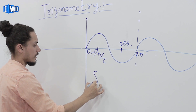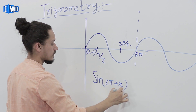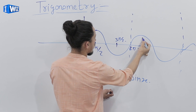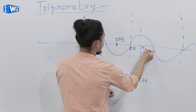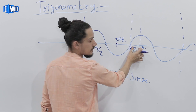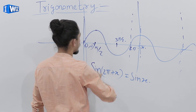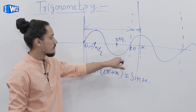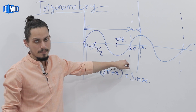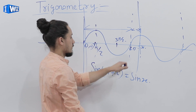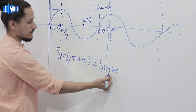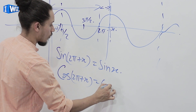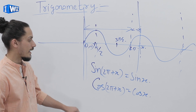To generalize, sine(2π + x) is equal to sine(x). It means that if I have a value, after 2π the value repeats. We can write sine(2π + x) = sine(x). Similarly, cos(2π + x) = cos(x). The same result is valid for secant and cosecant.